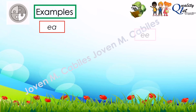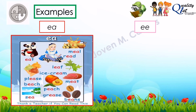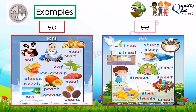Now we also have digraph E as in EA and E as in EE. For EA, we have: meal, leaf, ice cream, please, beach, sea, grease, and beans. For EE, we have: free, street, sleep, green, sneeze, sweet, sheet, cheese, and cream.